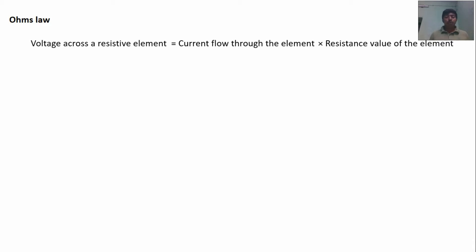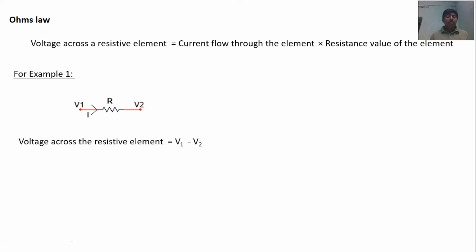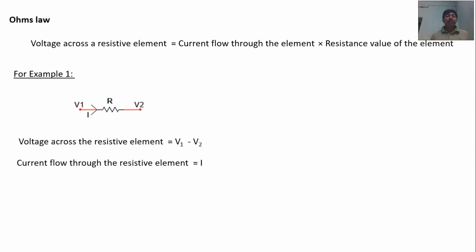That is explained in the previous video. For example, a resistive circuit is given here. This point is V1 voltage and the other point voltage is V2. Voltage across the resistive element is V1 minus V2. Current flows from V1 to V2, so V1 voltage will be higher than V2 voltage — then only the current will flow from V1 to V2. So, voltage across the resistive element is V1 minus V2, current flow through the resistive element is I. By Ohm's law, V1 minus V2 is equal to I into R.